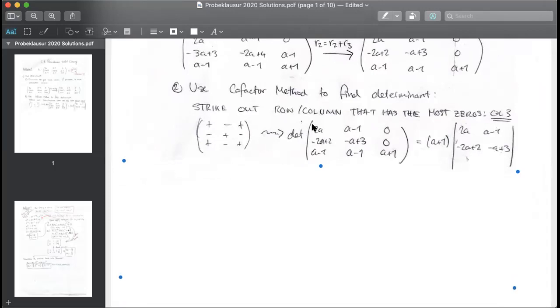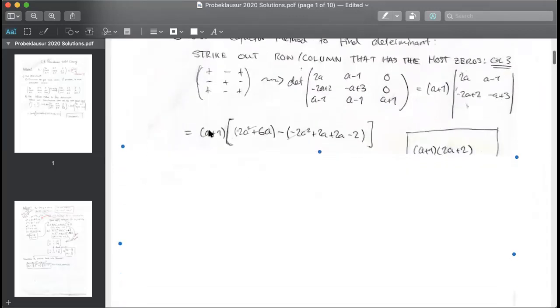Because the determinant of two by two matrices is the product of this diagonal minus the product of this diagonal. So yeah, I suppose I should point here. This times that minus this times that. And we'll see that over here, right? Our a plus one is still here.